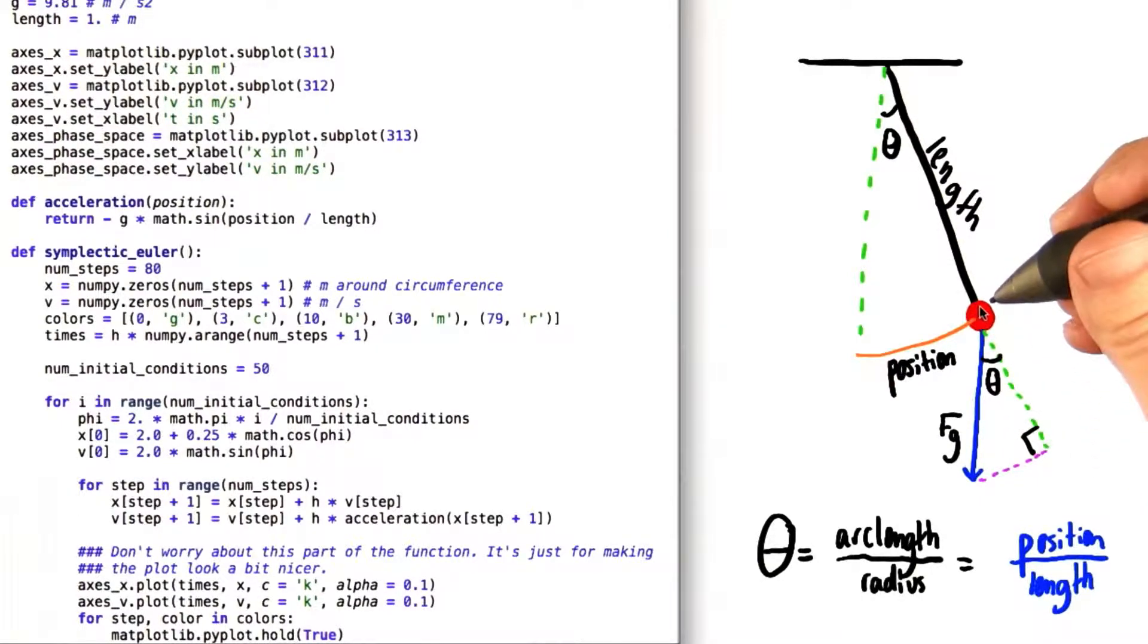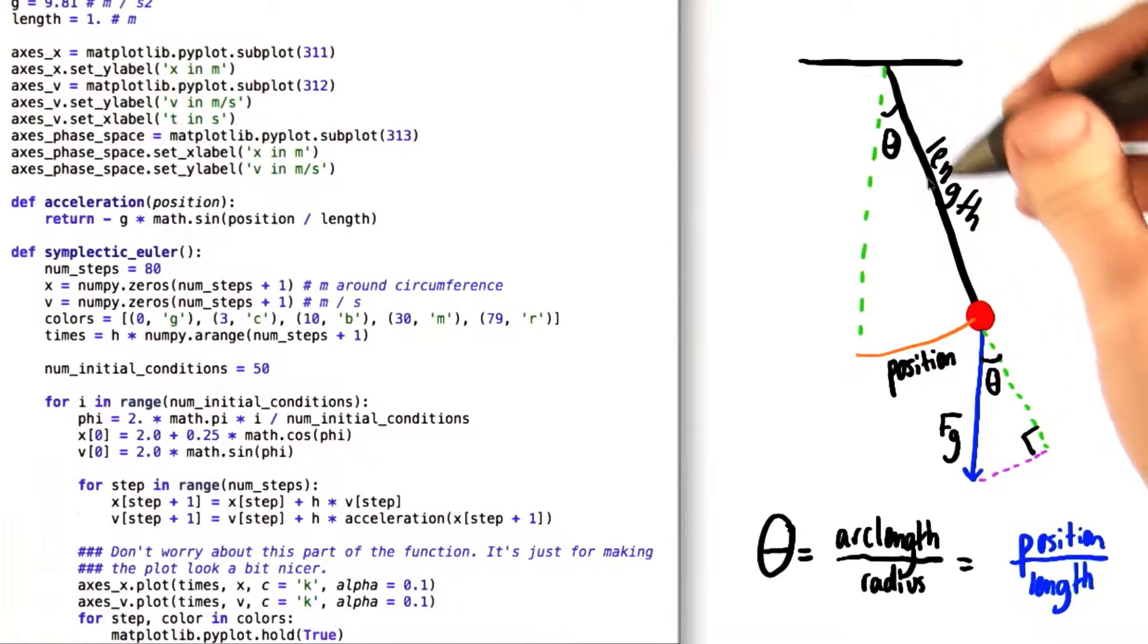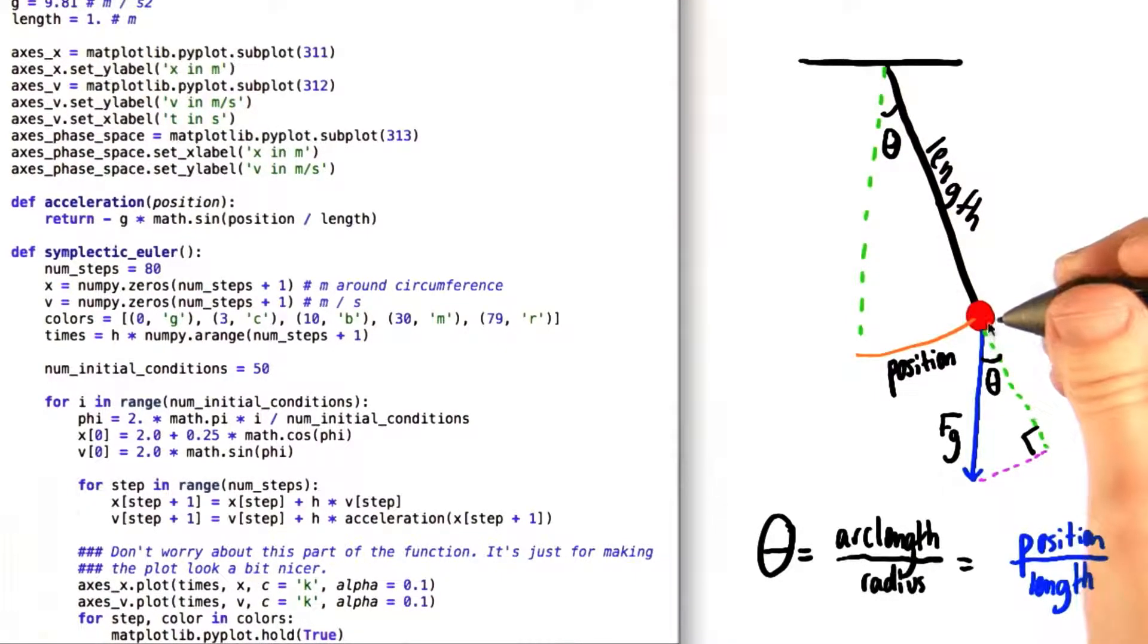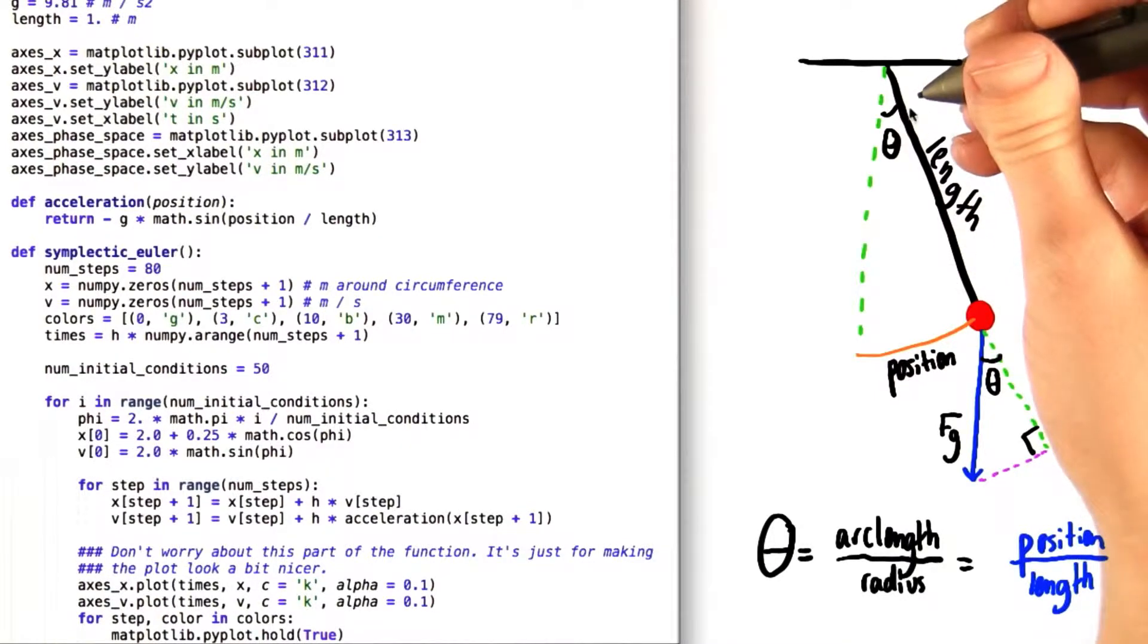So we can split this vector into two components. We have one component right here that is parallel to the string of the pendulum, and another component that is perpendicular to the string. Now we know that the acceleration in this direction is going to be exactly canceled out by the acceleration due to the tension in the rope.